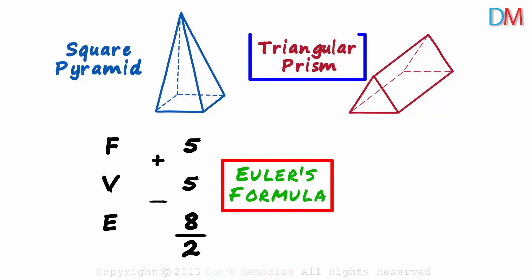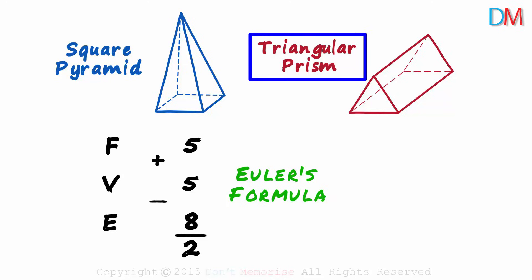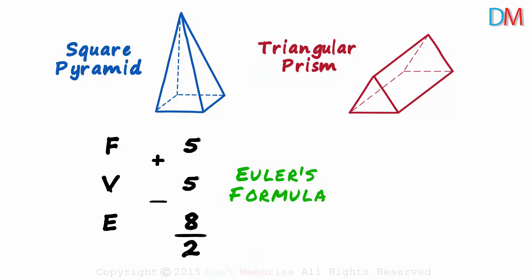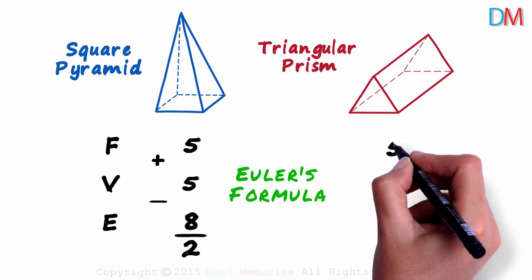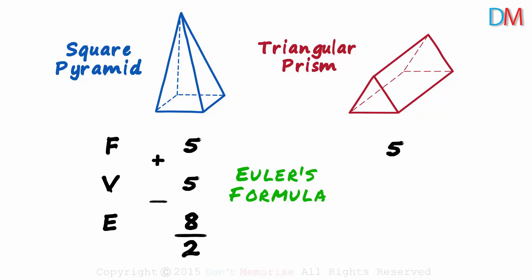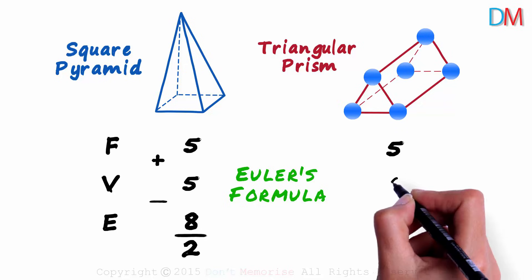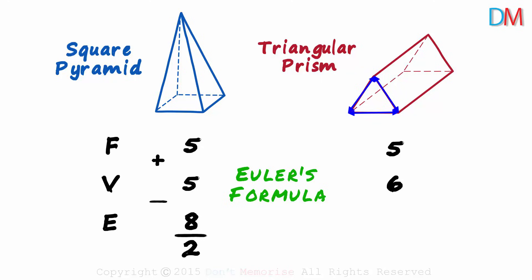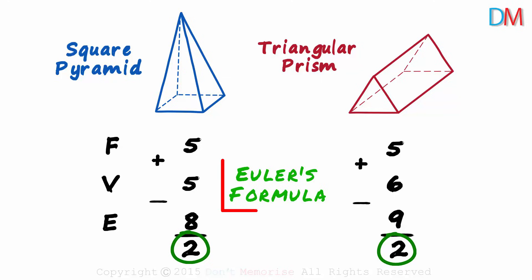Will Euler's formula work for the triangular prism too? Let's give it a try. How many faces? Two triangular faces at the ends and three rectangular faces in between — five faces. How many vertices? Three at this end and three at the other — six vertices. Three edges at the front face, three in between, and three at the back face — nine edges in all. Five plus six minus nine gives us two. We will always get a two. That's Euler's formula: F plus V minus E will always give us two.